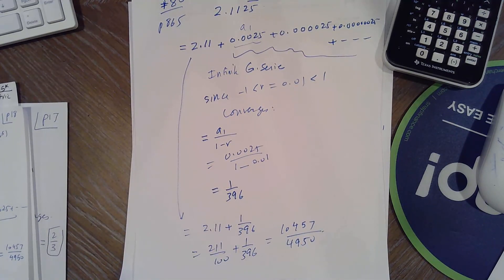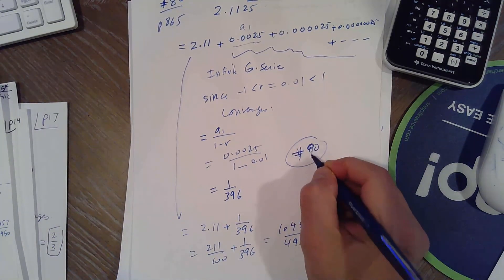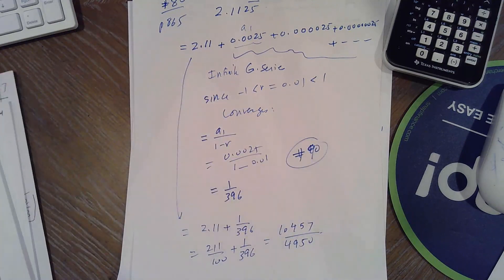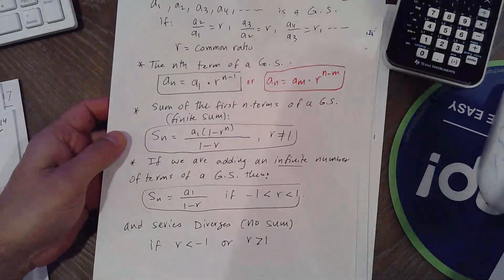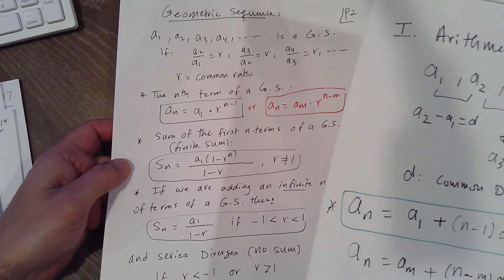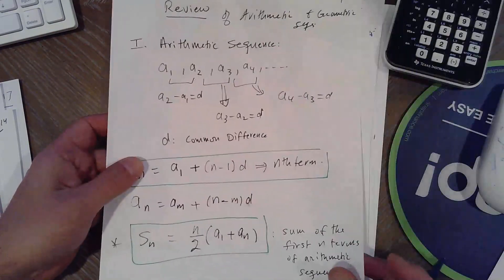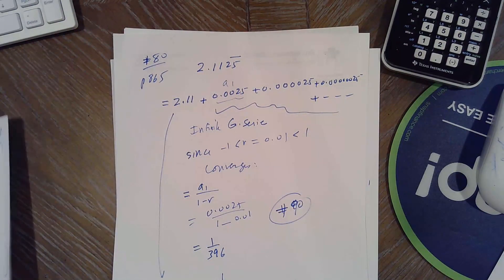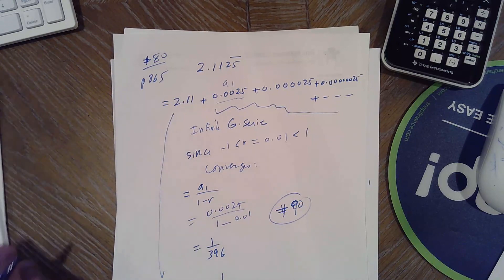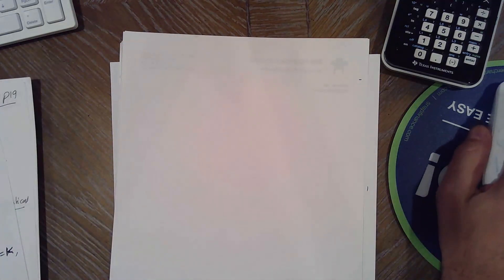Look at number 90 — it's already done, just make sure you know how to do it. It's on page 18 in the notes, and at the end there's a review summary in addition to the handout from section 12.2. We're skipping 12.4; the next section is 12.5 on mathematical induction, and then we'll finish with section 12.6.